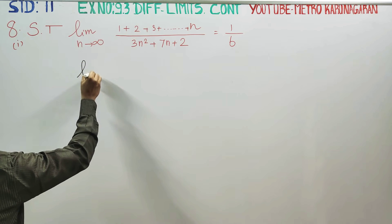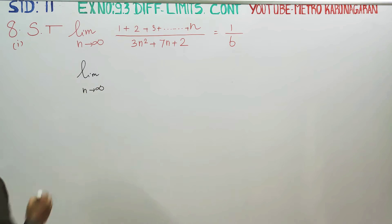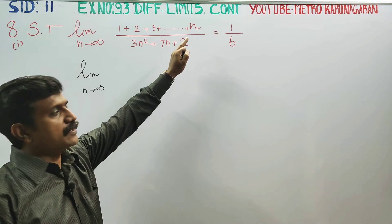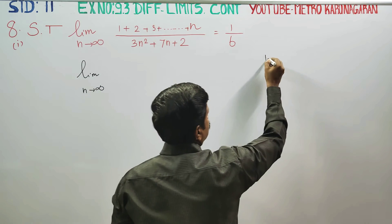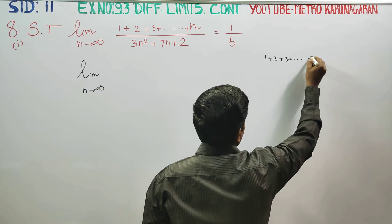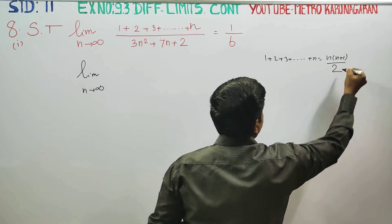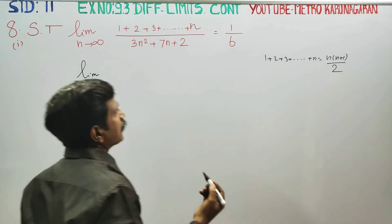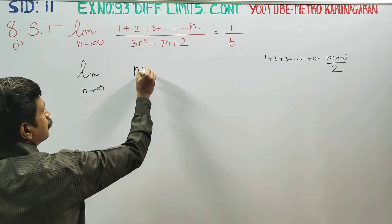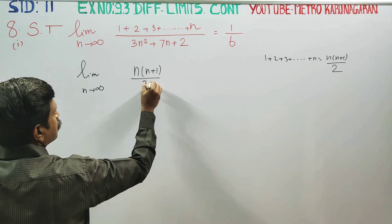First, limit n turns to infinity. The standard series 1 plus 2 plus 3 up to n — it is a special series formula. 1, 2, 3 dot dot dot up to n, we have to show that n into n plus 1 by 2. This is a ready-made formula. So 1 plus 2 plus 3 up to n equals n into n plus 1 by 2.